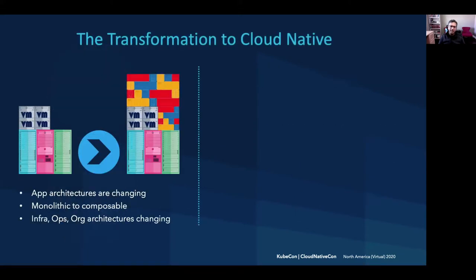But first, a little bit of historical context around the transformation to cloud native. As we all know, app architectures are changing from monolithic, bare metal, or VMs, to composable, or cloud native. Therefore, infrastructure is changing from monolithic to composable as well.